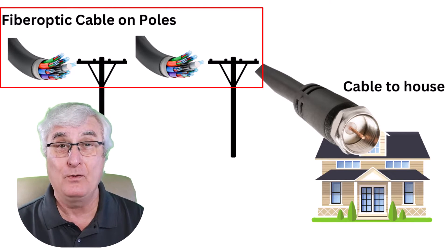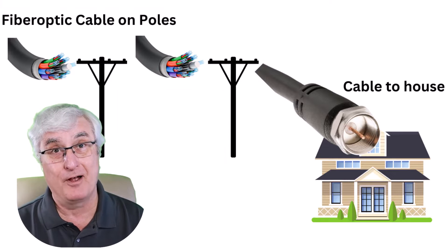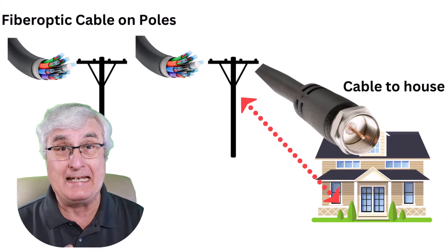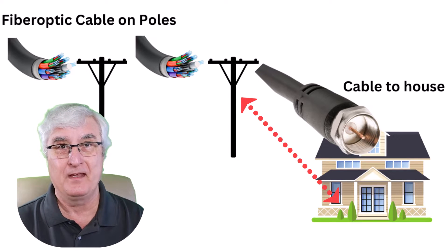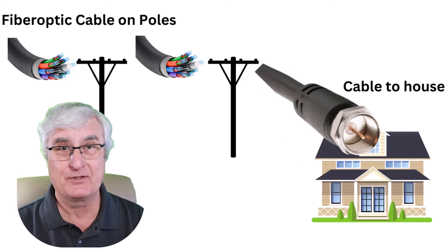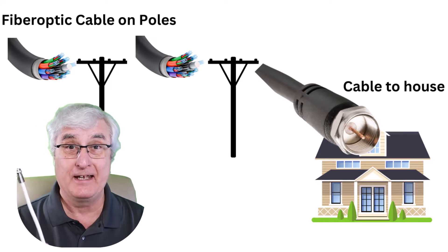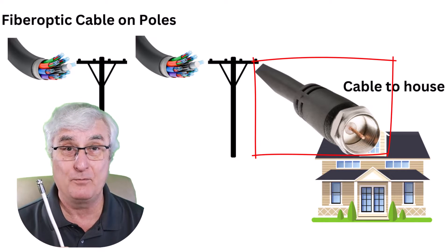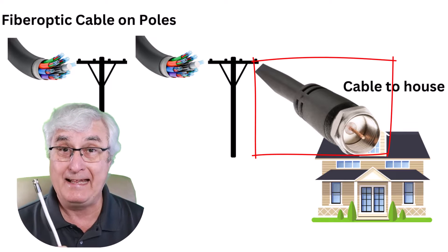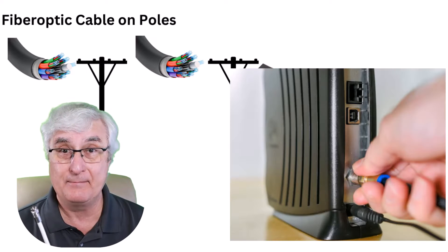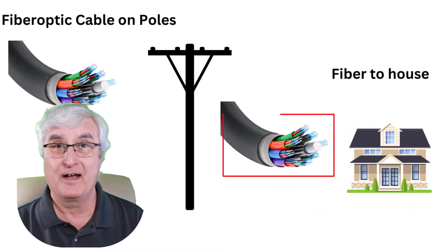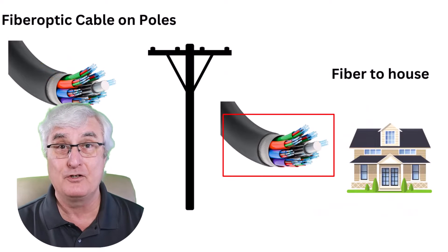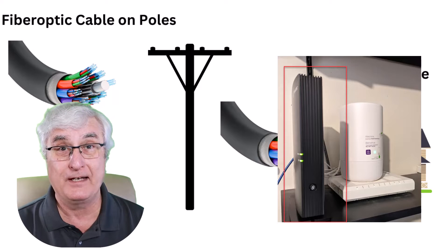So the only difference between fiber optic cable and fiber optic in your home is the distance between the telephone pole and your home. On a cable service, you have a cable piece that goes from the telephone pole to your home, and this connects to a cable modem. On a fiber optic system, you have the fiber optic line coming from the telephone pole to your home, hooking to a fiber optic modem.